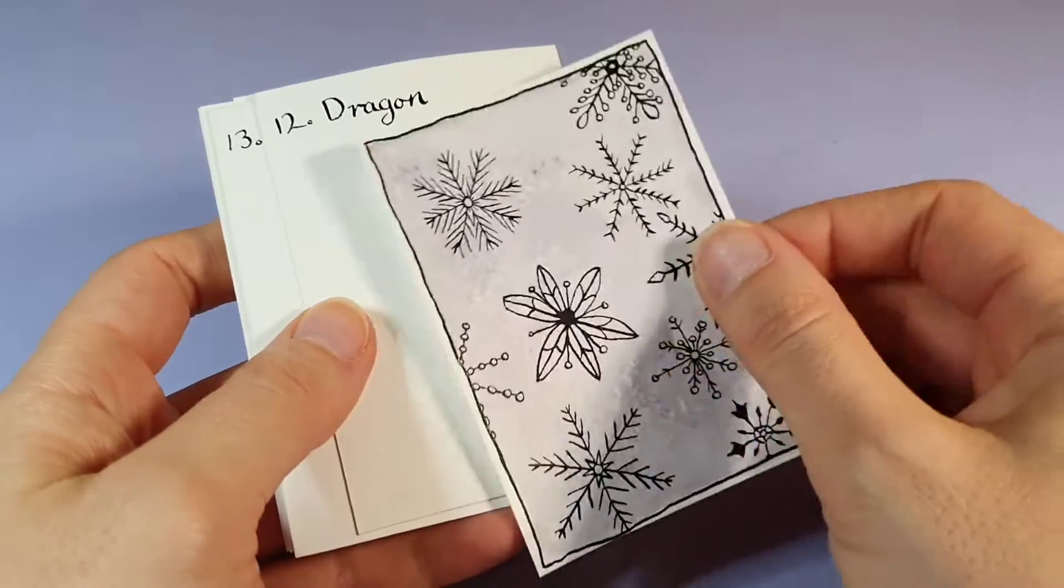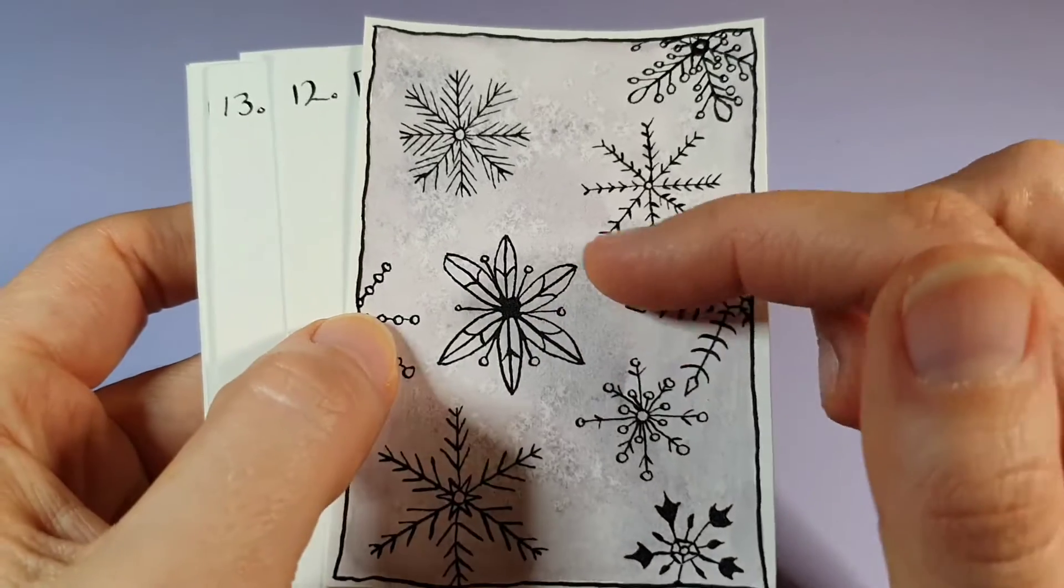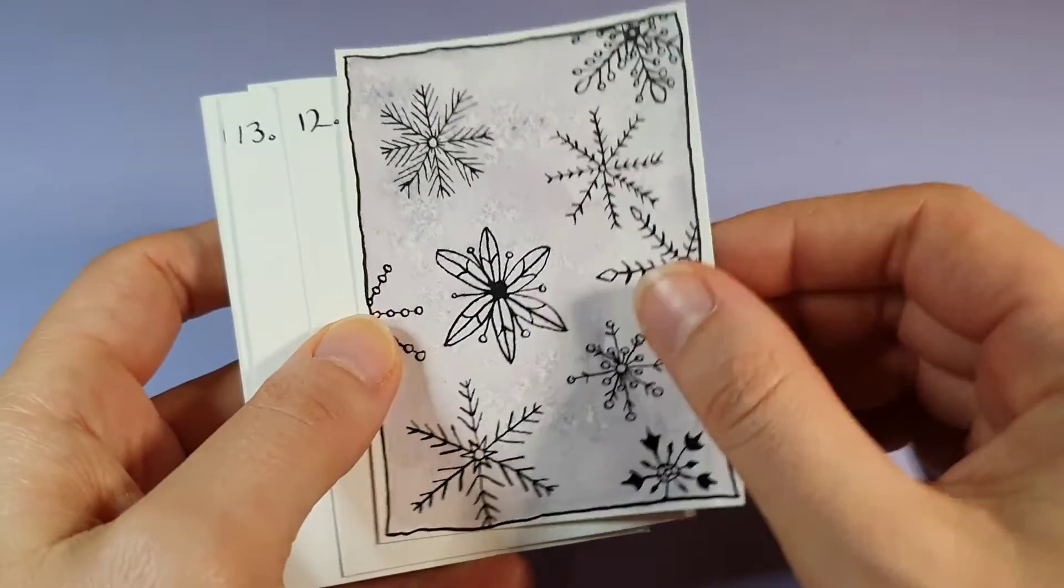On day 11, snow, keeping it simple with just some snowflakes and a sprinkle of salt to get that snowflake look in the background with Moonglow.